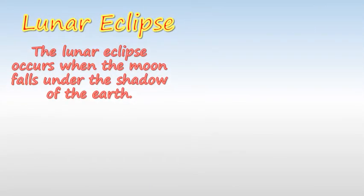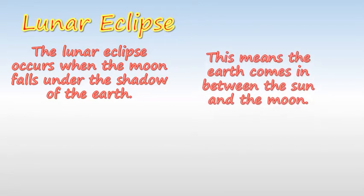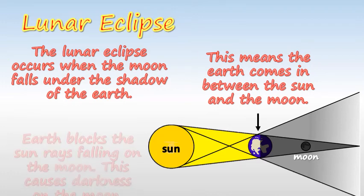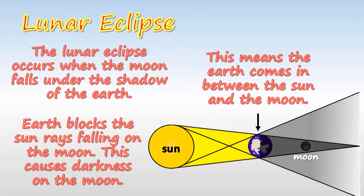Lunar Eclipse. The lunar eclipse occurs when the moon falls under the shadow of the earth. This means the earth comes in between the sun and the moon. Earth blocks the sun rays falling on the moon. This causes darkness on the moon. This is lunar eclipse.